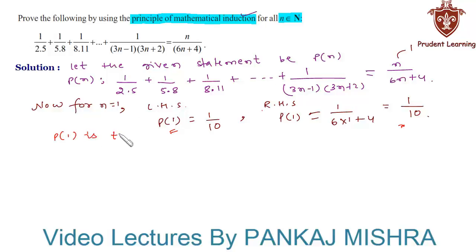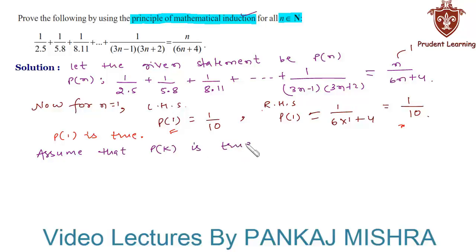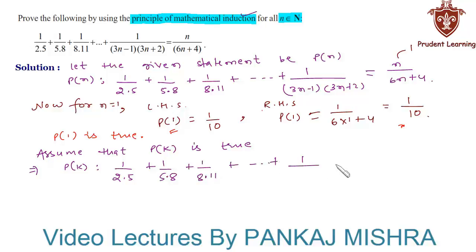In our second step, that is our assumption step, we assume that P(k) is true for some positive integer k. That is: 1/(2×5) + 1/(5×8) + 1/(8×11) + ... + 1/((3k−1)(3k+2)) = k/(6k+4). Let us call this equation 1.